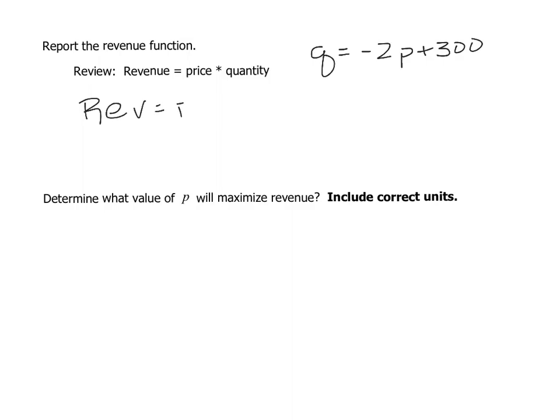We know from earlier that if we're trying to find the revenue, revenue always equals our price times our quantity. This formula has two variables, P and Q, and we can put it into just one variable by taking this formula that we built for Q and substituting that in there.